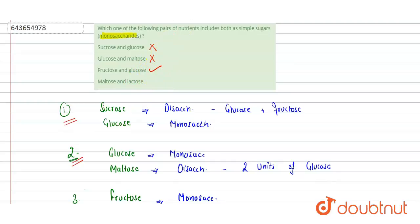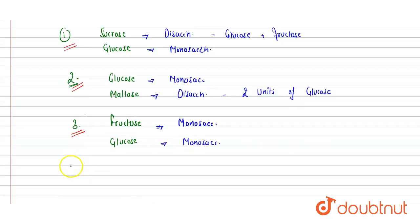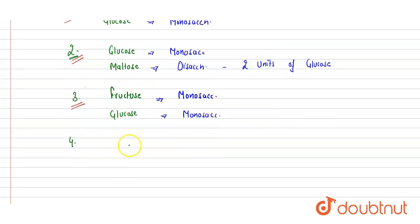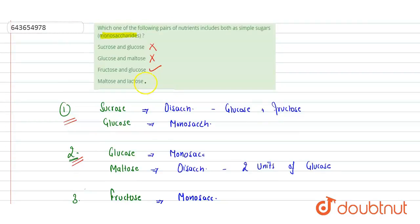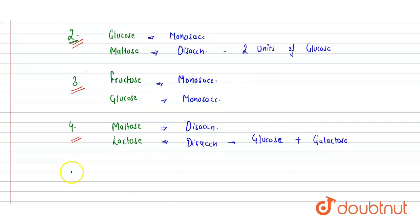Although we have found our correct option, we will verify the fourth one as well: maltose and lactose. Maltose is a disaccharide made up of two units of glucose. Lactose is also a disaccharide — the milk sugar — formed of glucose plus galactose. Both sugars in this pair are disaccharides, so this is an incorrect option. Therefore, option C is the correct answer.